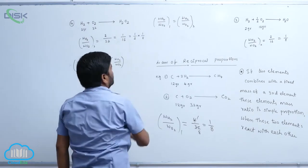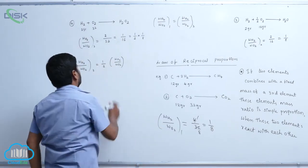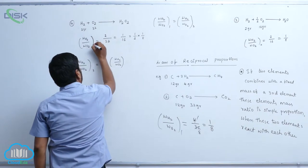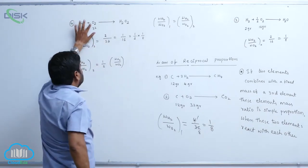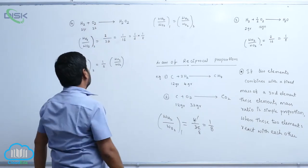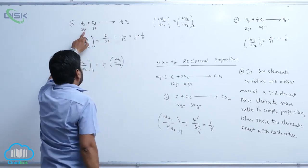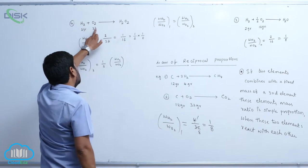Coming to this particular equation, 2H2 plus O2 gives rise to hydrogen peroxide. It forms 2 grams of this, then 32 this.